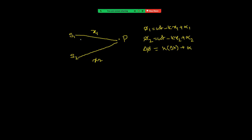Any two sources which maintain a constant phase difference are called coherent sources. Here alpha is constant, delta-x is constant, and k is also constant, so the phase difference between the two sources is constant. One basic condition to maintain constant phase difference is that the frequencies must be the same — coherent sources must have the same frequency.